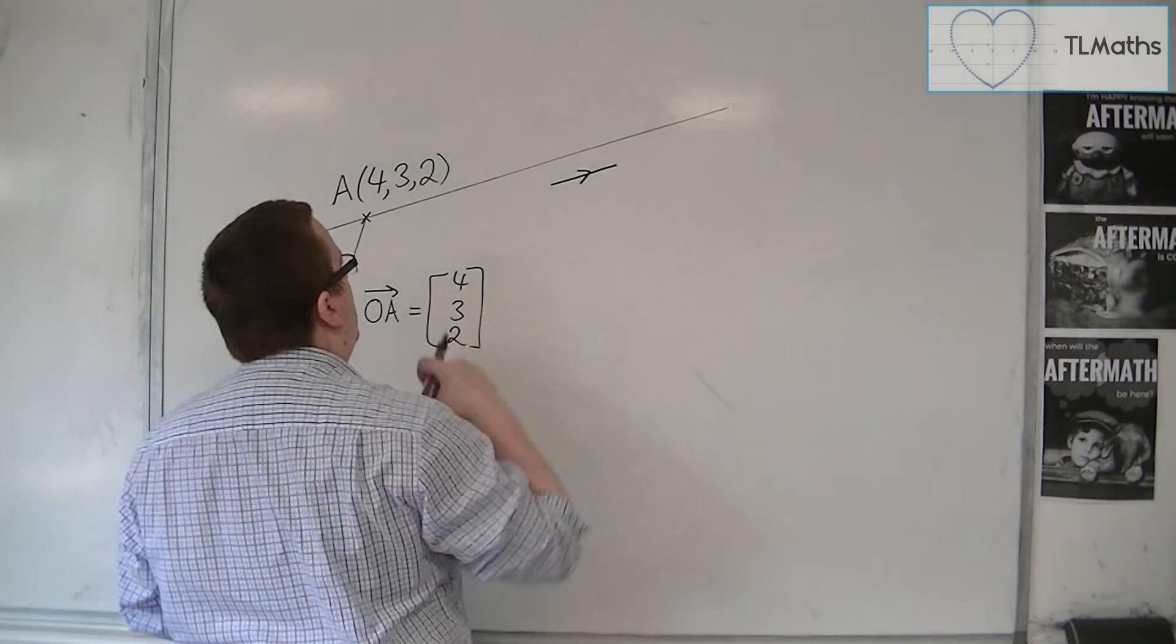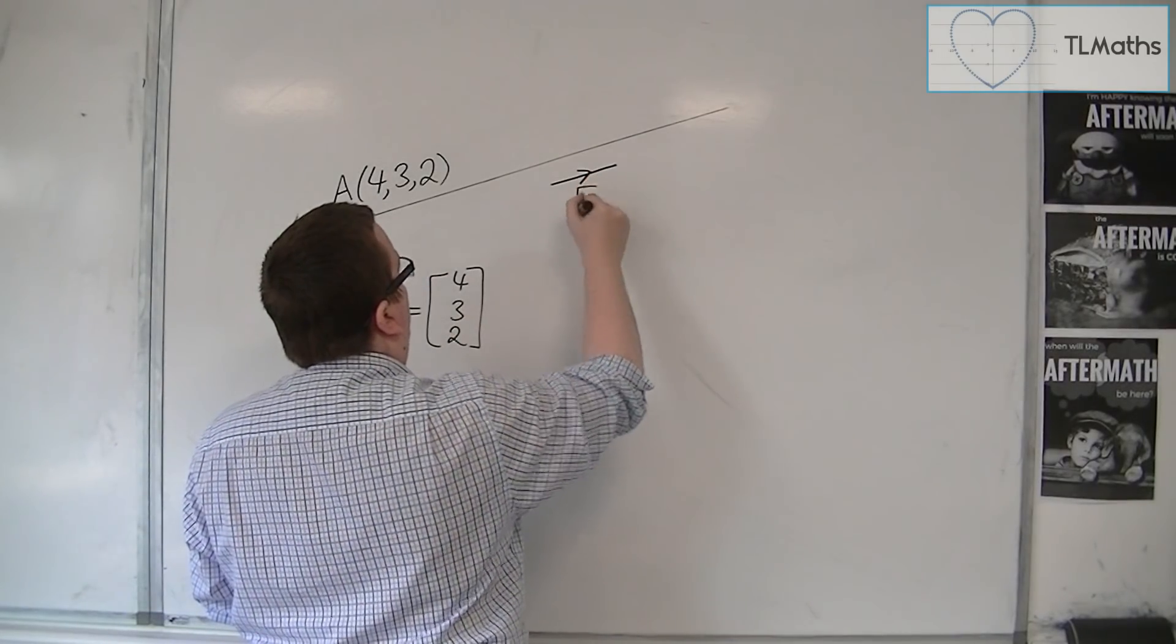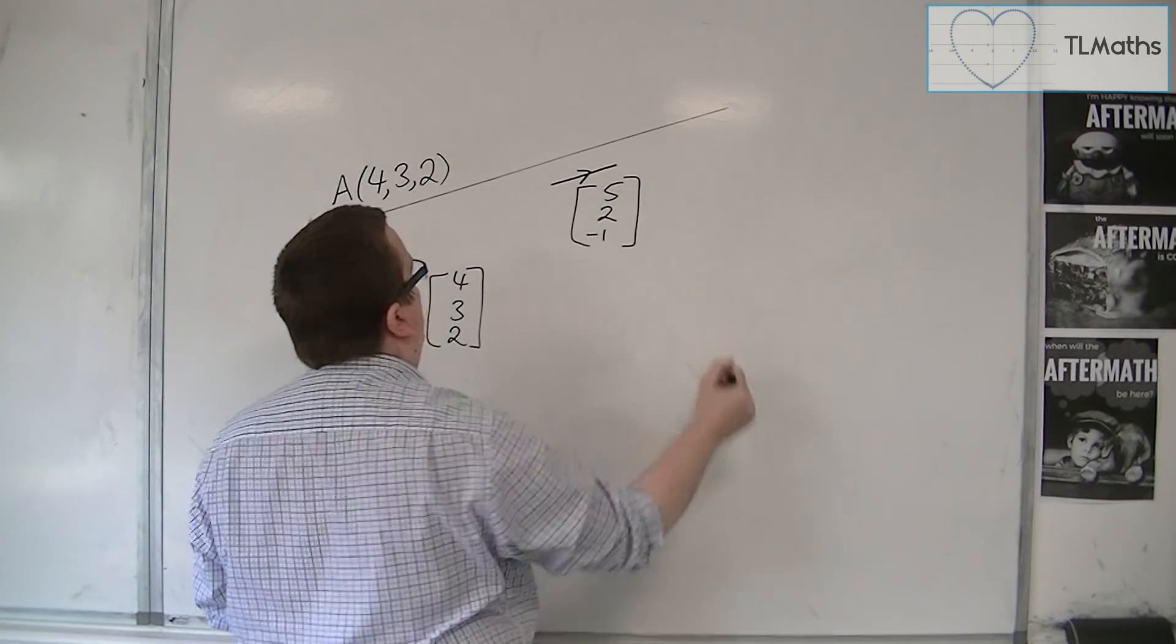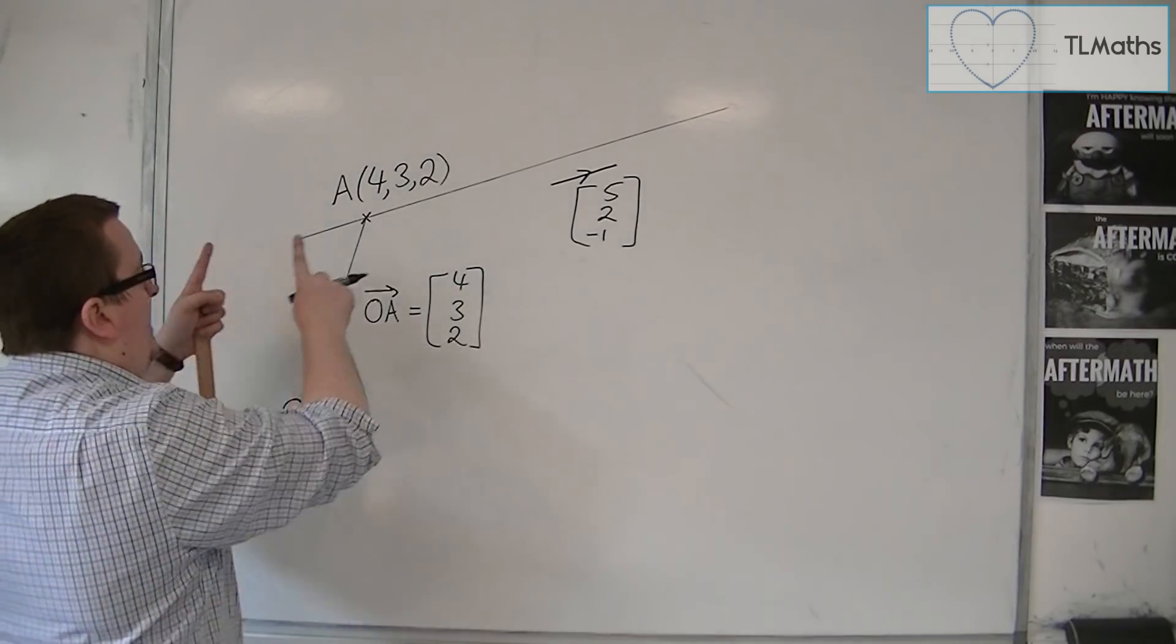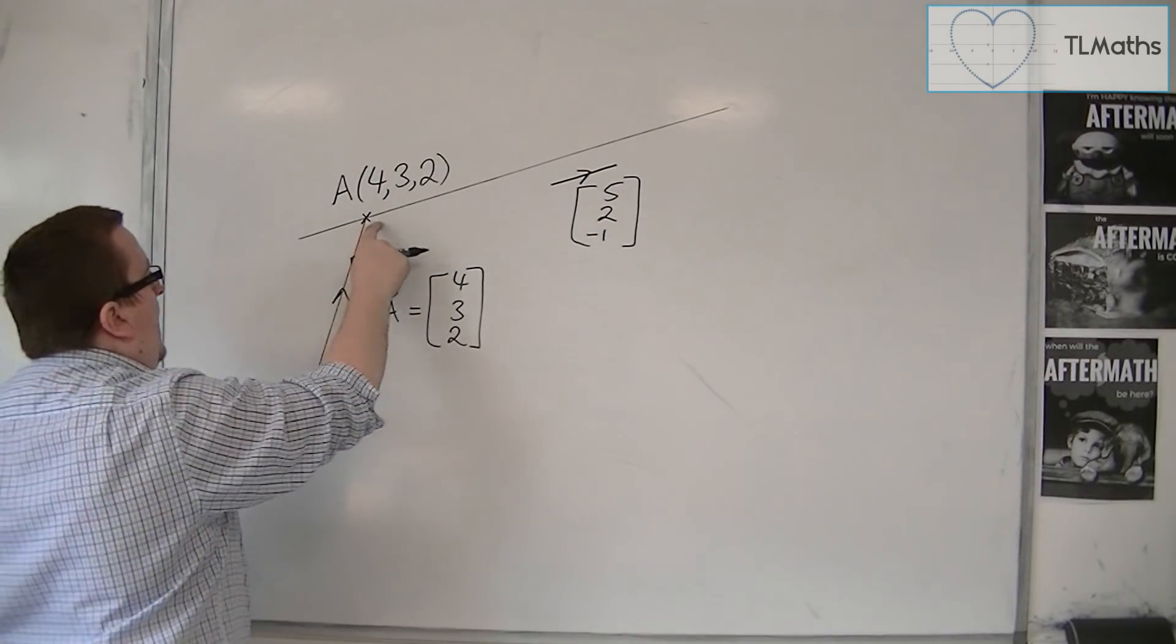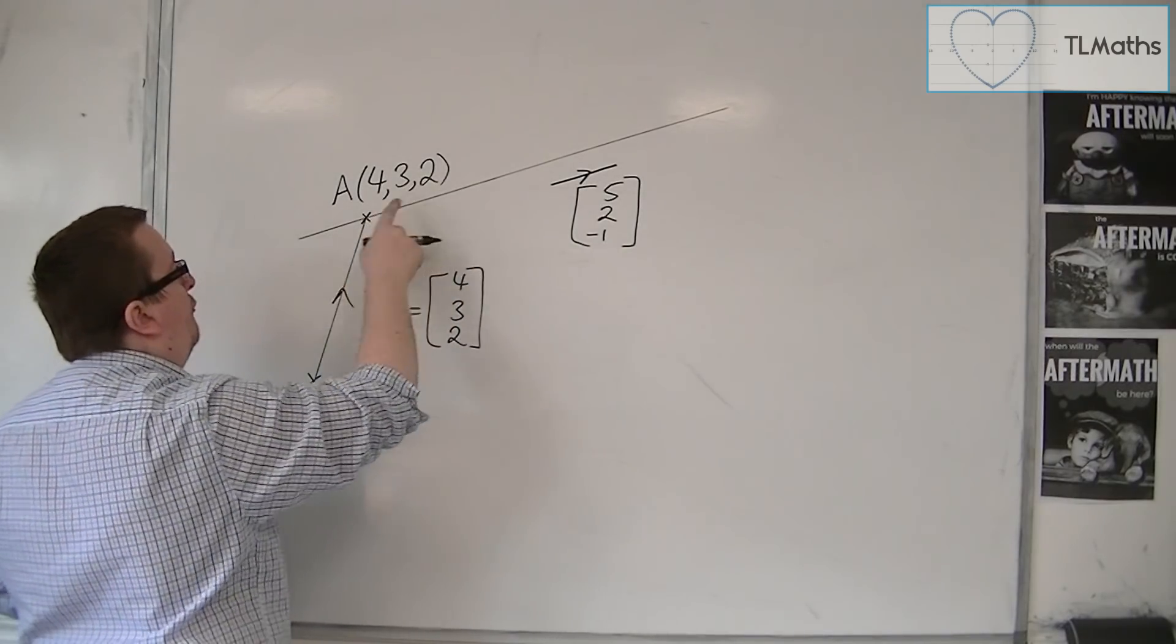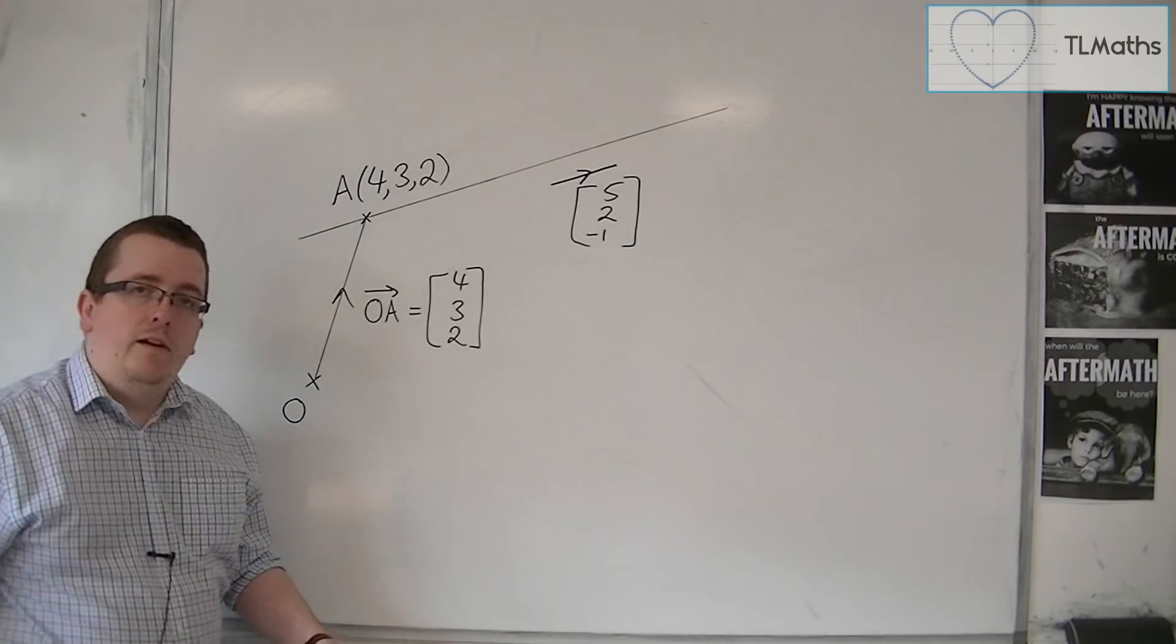So, this direction vector could be something like 5, 2, minus 1, for example. That might be the direction vector. And so, to get to any point that is on this line, I need to get from O to A, and then any amount, a certain amount of 5, 2, minus 1, will get me to any point that is along that line.